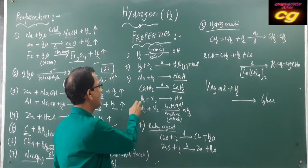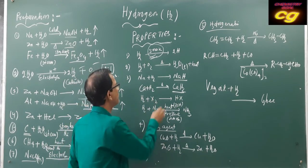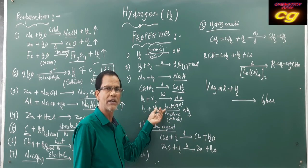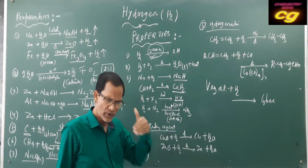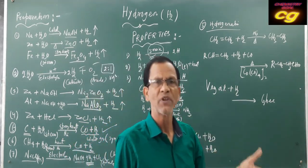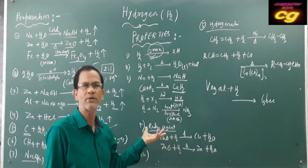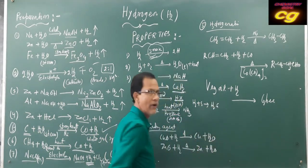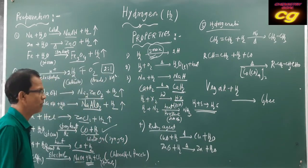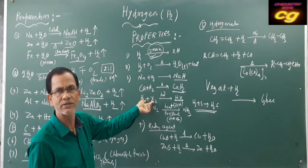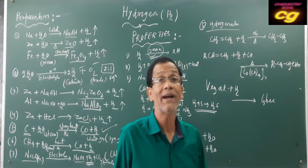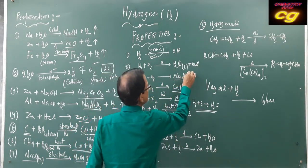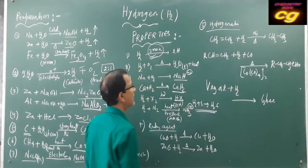Hydrogen reacts in the presence of light or heat to produce halides (HX). Hydrogen reacts with nitrogen at high temperature and high pressure to produce ammonia. Different types of hydrides can be produced: carbon produces hydrocarbons, nitrogen produces ammonia, and there are hydrides of phosphorus, sulfur, and halogens. In metal hydrides, hydrogen is in the minus one oxidation state, but in non-metal hydrides like ammonia, hydrogen is in the plus one state.